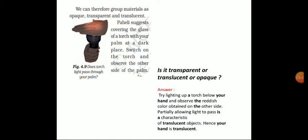So can you remember, children, what is translucent? Light partially passes through the object, and we cannot see the object clearly. That is what happened with the palm — we can identify blood flow but we cannot see the blood. Partially allowing light to pass is the characteristic of translucent objects. Hence, your hand is translucent.